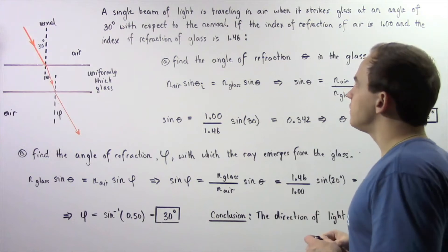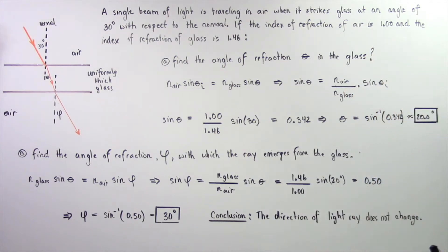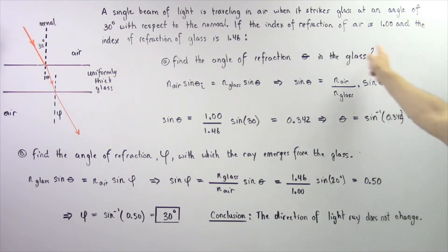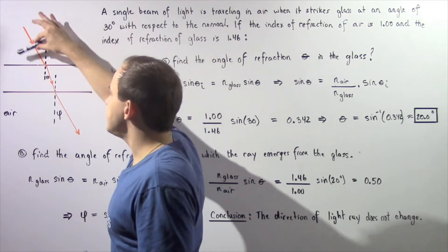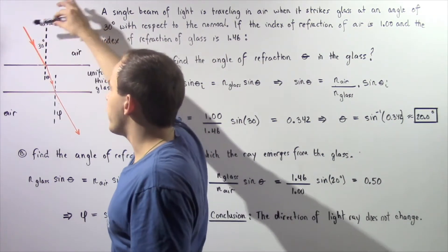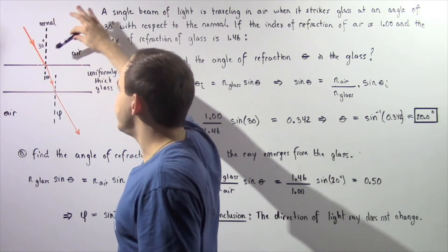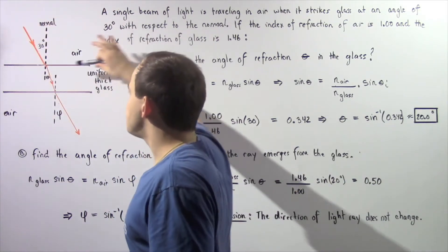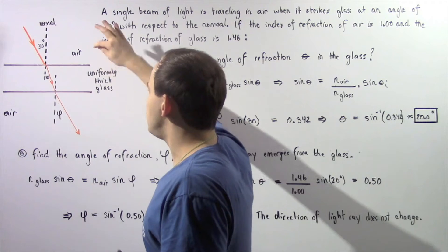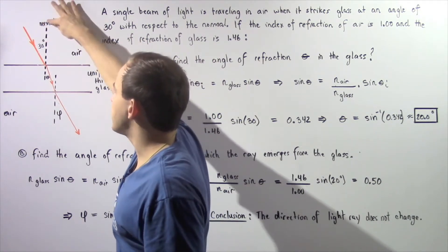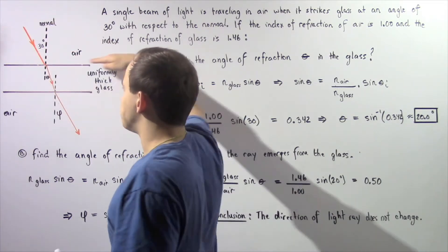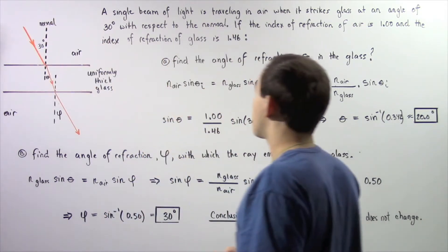Suppose a single beam of light is traveling in air when it strikes the surface of uniformly thick glass at an angle of 30 degrees with respect to the normal. So we have a single ray of light traveling in air that eventually hits the surface of a uniformly thick glass at an angle of 30 degrees with respect to the normal line that is perpendicular to the surface.